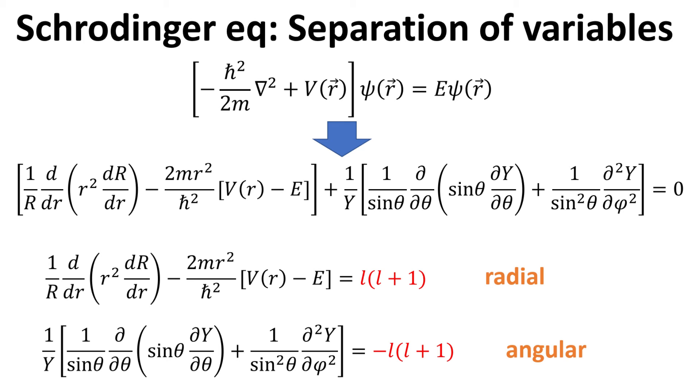The first equation is the radial equation, and can only be solved if the potential V is given. We shall discuss this in the next video on hydrogen atom. The second equation is the angular equation, whose solutions give us the spherical harmonics, and is the focus of the remaining of this video.